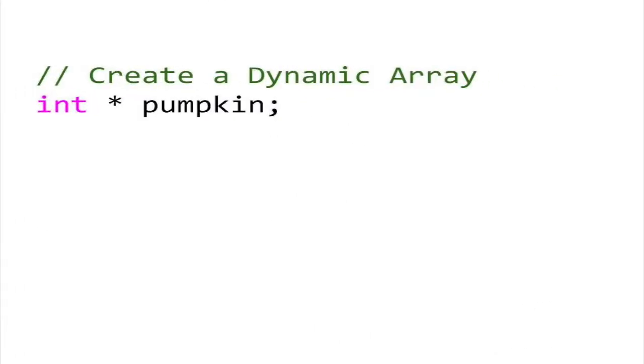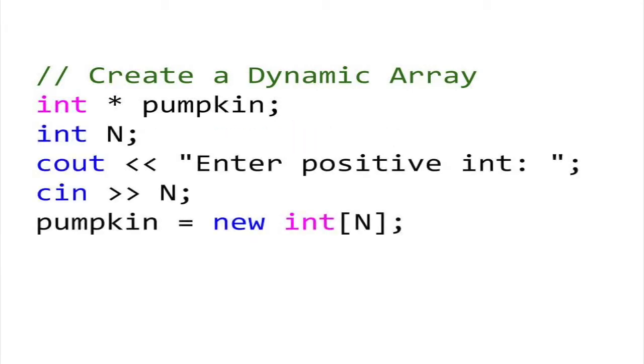Here is an example. Suppose we declare a pointer to an int called pumpkin. We can now use pumpkin as a reference to an array of any size. Suppose we add logic to our program that asks the user to input a number. Let this number be n, the size of the array. Next, we can create this array of n elements using the new operator. We are now allocating n spaces in memory for int-sized objects.